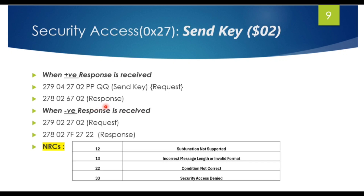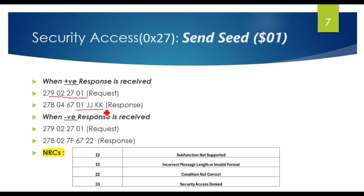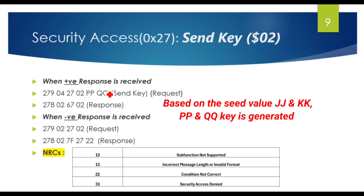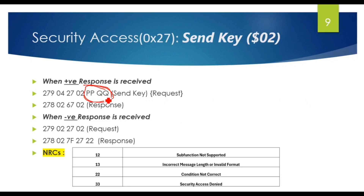To summarize security access: you send 27 01 and the ECU generates two bytes of random number as the seed value JJ and KK, which is sent to the tester tool. Based on this seed value, the key value PP and QQ is calculated using the cryptographic algorithm shared between the ECU and tester tool, as provided by the OEM. You then send this key in the request, and if it matches, the ECU is unlocked, indicated by the positive response.